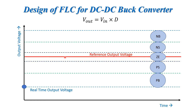If we assume this red line as the reference output voltage, these are the ranges we have set — this is the output voltage axis and this is time. If our output voltage is at this red dot, we will say that our output is lying in the negative small error zone.